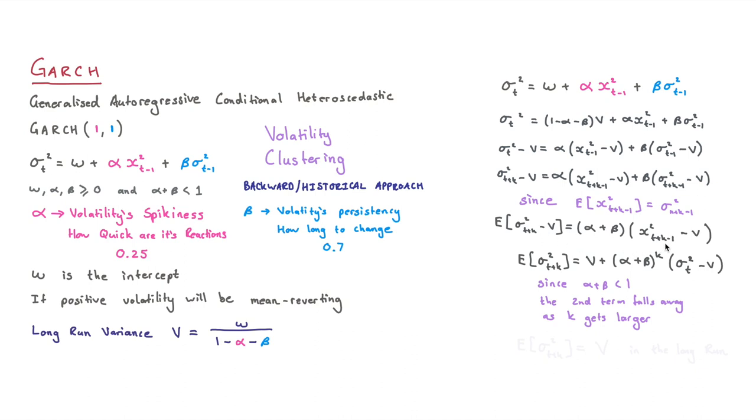And then what we can do is we can rearrange the math back to get to the situation where the expected value of σ²_t+k is going to be equal to V + (α + β)^k times (σ²_t - V).